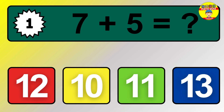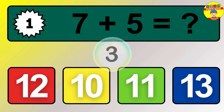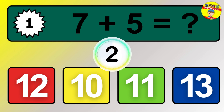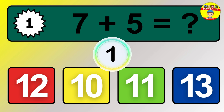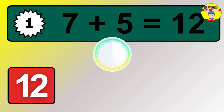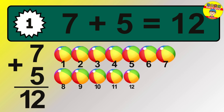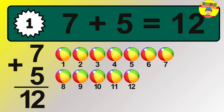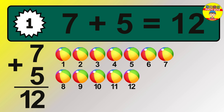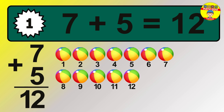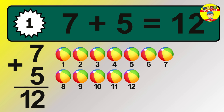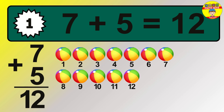Question 1. 7 plus 5 equals what? So the answer is 7 plus 5 is 12. Let's count it. 1, 2, 3, 4, 5, 6, 7, 8, 9, 10, 11, 12.